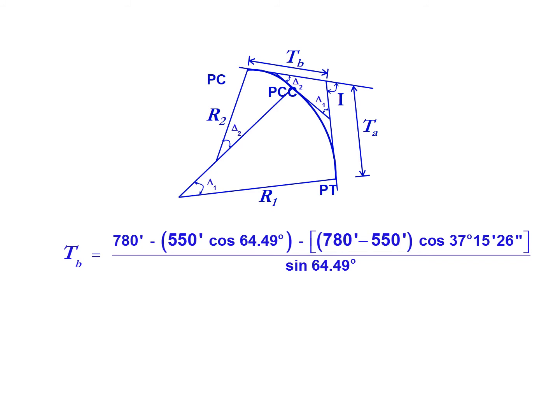We're going to input the factors that we know that we're given. We're going to simplify that, and again I recommend that you solve this incrementally so that you avoid as many errors as possible. We'll come up with a final answer for T sub B of 399.03 feet.